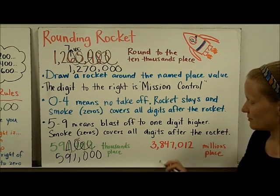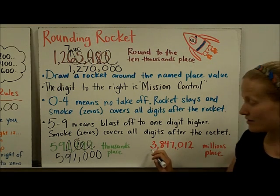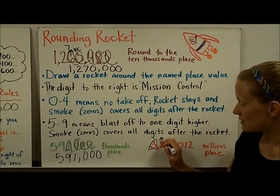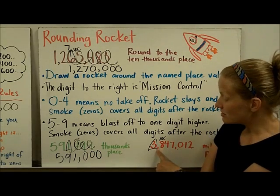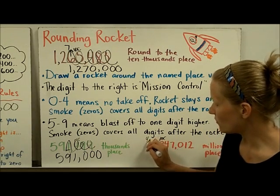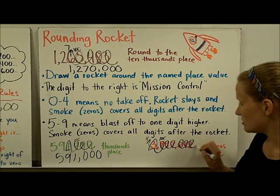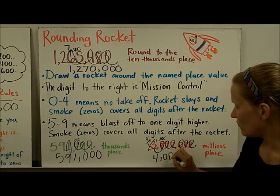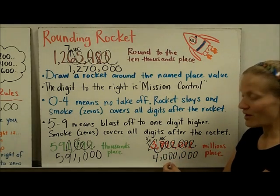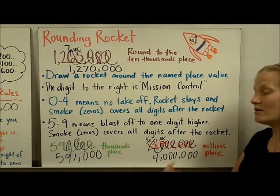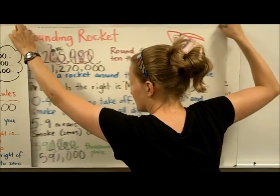One more problem — in the millions place. Ones, tens, hundreds, comma, thousand, ten thousand, hundred thousand, comma, million — there it is. I'm going to put my rocket around the millions place, and this digit is mission control. Mission control counts: 8, 7, 6, 5, 4, 3, 2, 1, 0 — blast off! The 3 blasts off to a 4, going up to the next highest number because this is 5 or greater, and it lets out a lot of smoke so all those numbers turn to zero. It becomes 4,000,000 when rounded to the millions place. In other words, if I was counting by millions — 1,000,000; 2,000,000; 3,000,000; 4,000,000; 5,000,000 — this number is closer to 4,000,000 than 3,000,000.